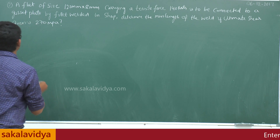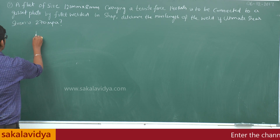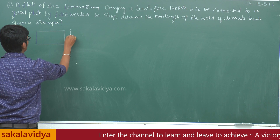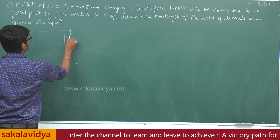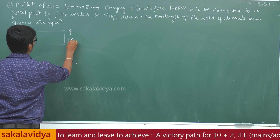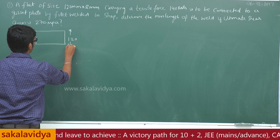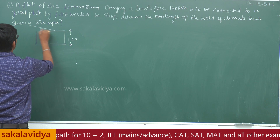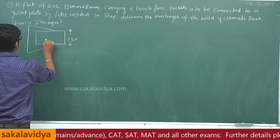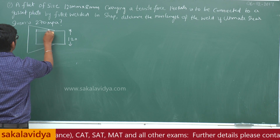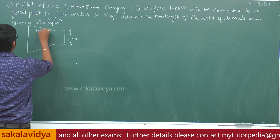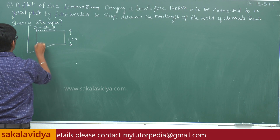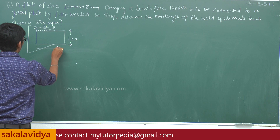Let us sketch the diagram for this. This is a flat or plate with width of 120 mm and thickness 8 mm, which is connected to a gusset plate. We do not know what length we need to weld. Let this length be L1 and this length be L2.